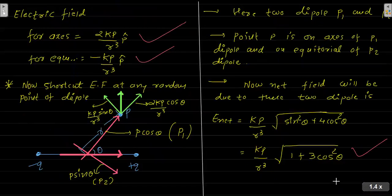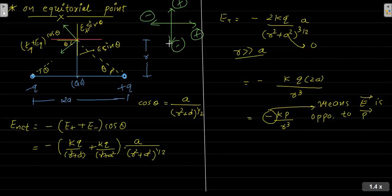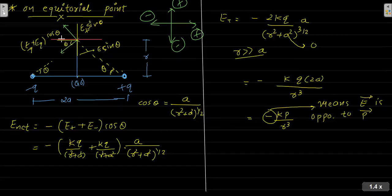Now let's talk about the equatorial point. At the equatorial point, we have a point from the origin. The negative charge contributes an electric field in one direction, and the positive charge contributes in another. We define a sign convention: left direction is negative, downward is negative, right is positive, and upward is positive. We get angle theta for both fields.